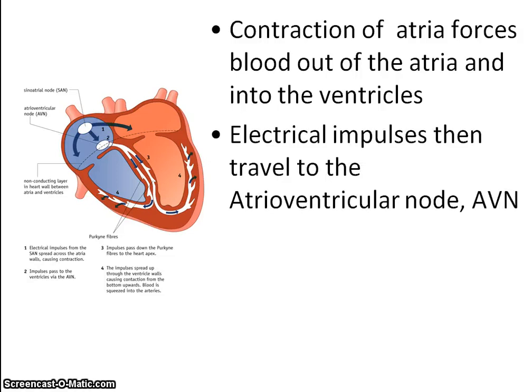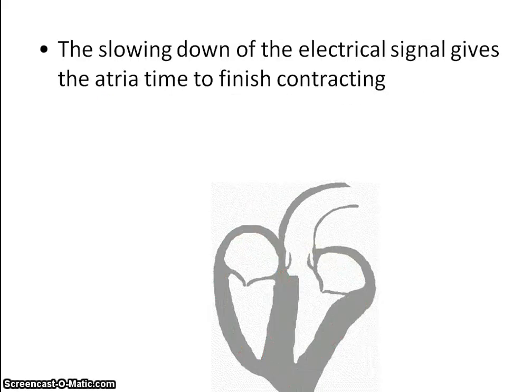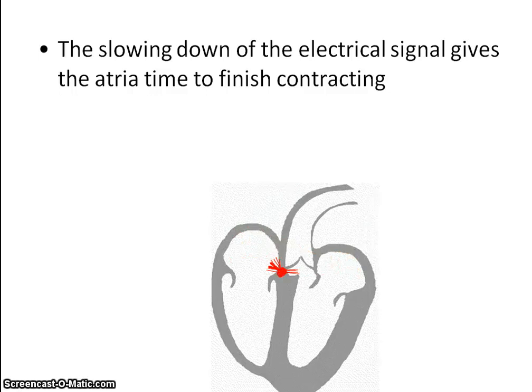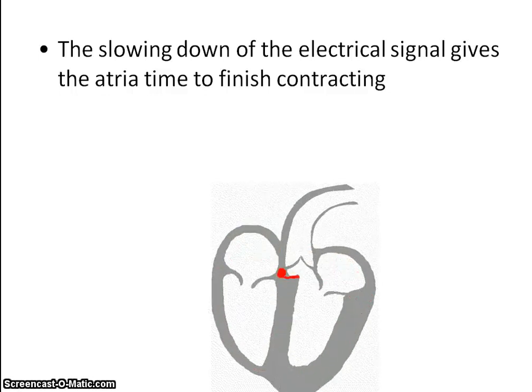Then the electrical impulses travel to the atrioventricular node, the AVN. Again, a small bundle of specialized cells, more to the center of the heart, and it acts like a gate that slows down the signal.